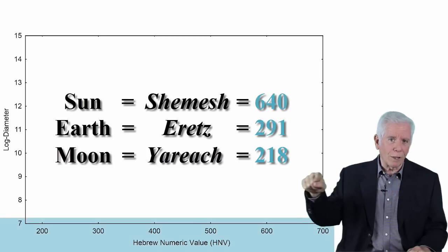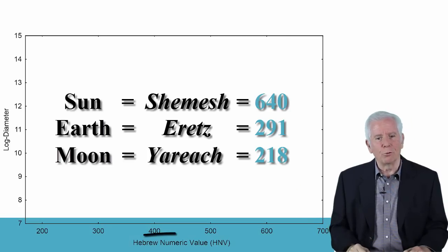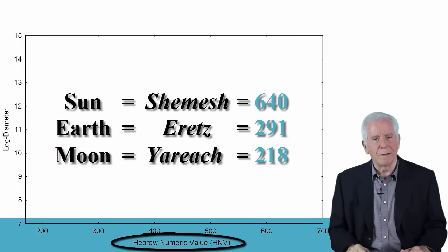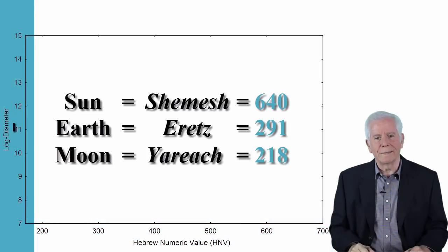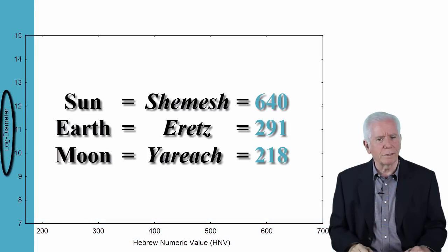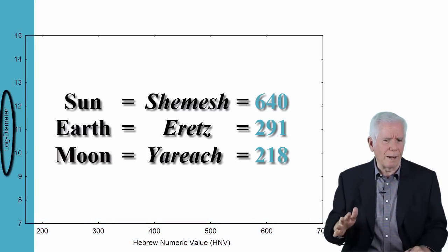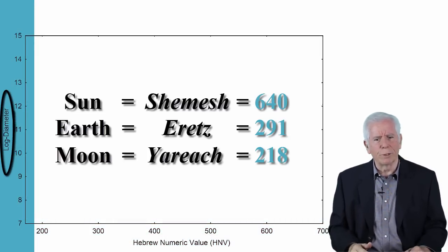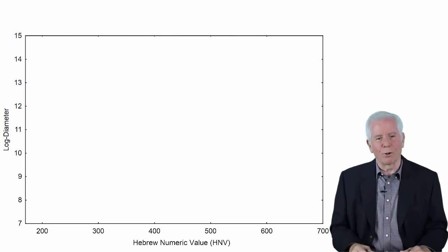On the horizontal axis, we mark the numeric values of the Hebrew words. On the vertical axis, the diameters of these celestial objects on a log scale, a widely used scientific scale for representing a set of measures that differ by order of magnitude. We obtain the following plot.